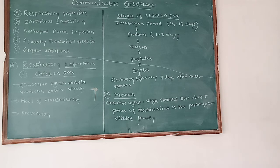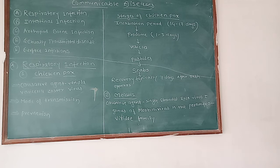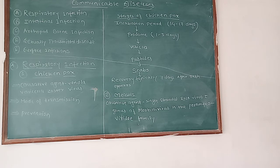Now we will see the pathogenesis. The smallpox/varicella virus enters the body through the upper respiratory tract. It first infects the mucosal cells and soon afterwards reaches the regional lymph nodes. So, firstly it infects through the upper respiratory tract, then infects the mucosal cells, then reaches the regional lymph nodes.